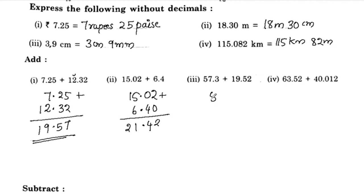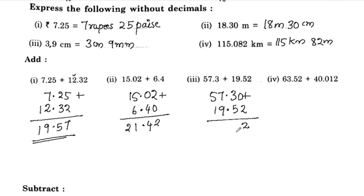Express the following with decimals: 2, 2 plus 0 is 2, 5 plus 3 is 8, 9 plus 7 is 16, 5 plus 1 is 6, 6 plus 1 is 7 — so the answer is 76.82.